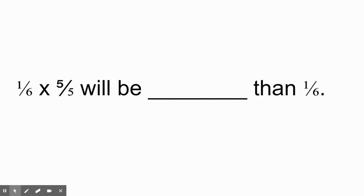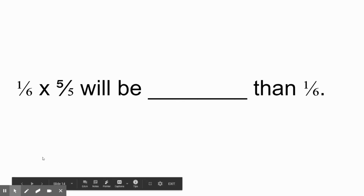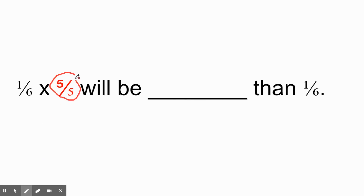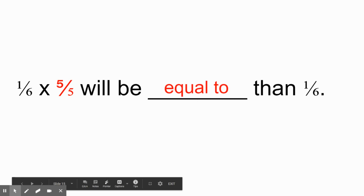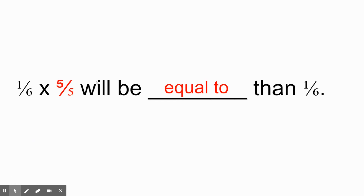Next: one-sixth times five-fifths will be blank than one-sixth. Is it going to be greater than one-sixth, less than one-sixth, or equal to one-sixth? The key number here is five-fifths — it's the only number shown to us one time. Is five-fifths greater than a whole, equal to a whole, or less than a whole? Five-fifths is equal to one whole, which means the answer is equal to one-sixth. One-sixth times one will be equal to one-sixth.